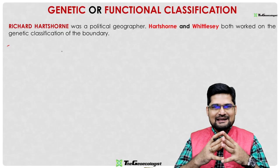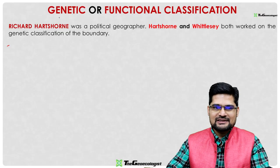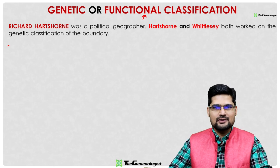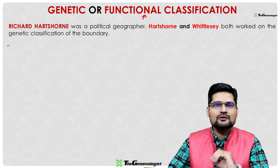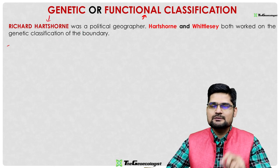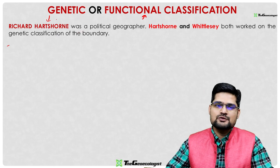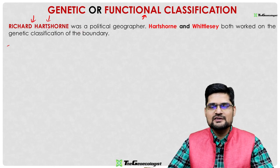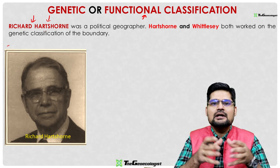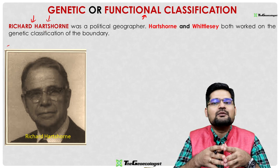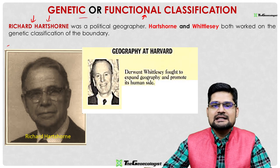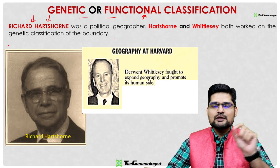Let's discuss the first classification — the genetic or functional classification of boundaries. To understand this, we need to look at the timeline and the scholar. Richard Hartshorne, a prominent political geographer known for the concept of areal differentiation from his book 'The Nature of Geography' written in 1939, gives insight into this genetic and functional classification of boundaries, proposed around 1936.